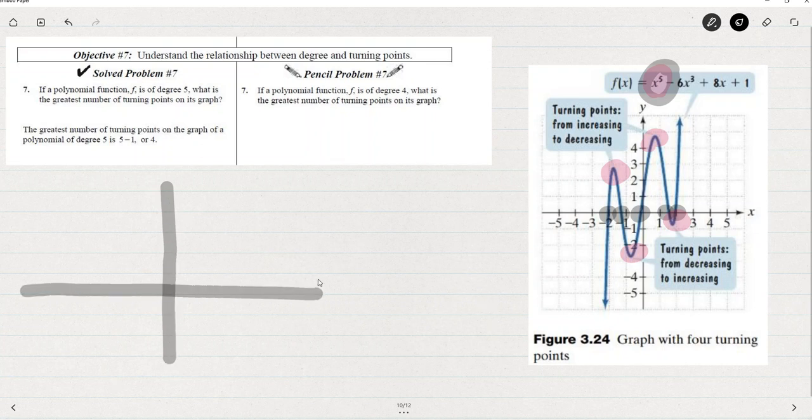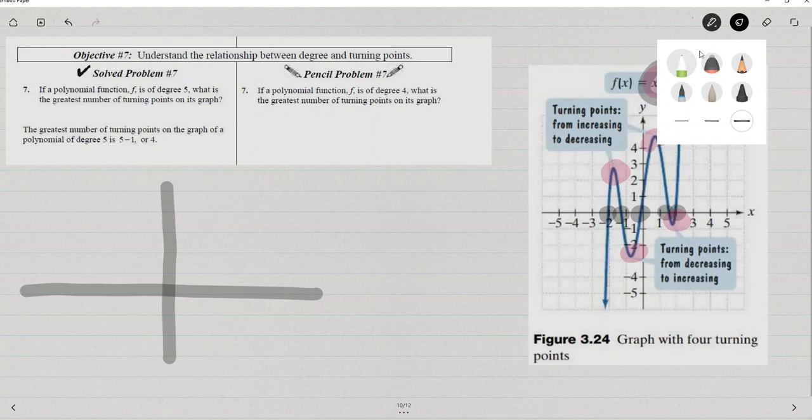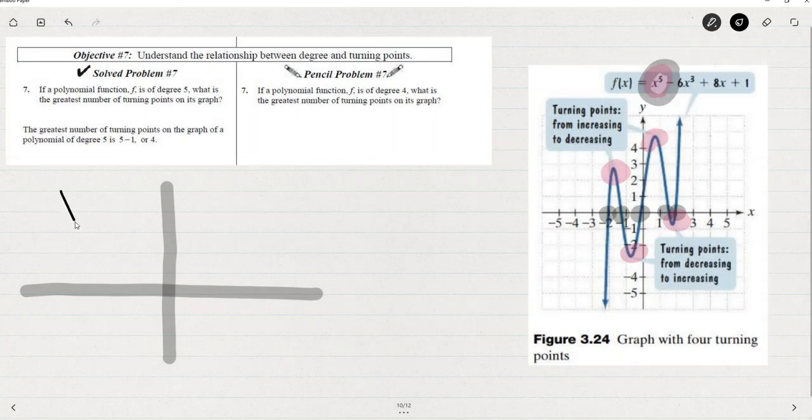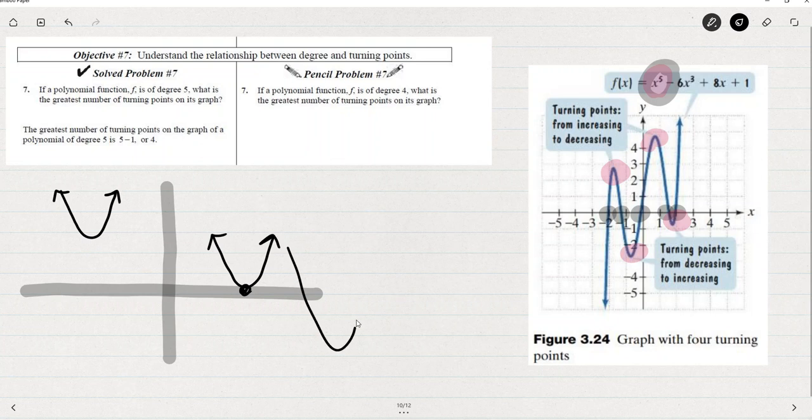a quadratic, degree two, I'm going to say there's at most two zeros. But do you see that this parabola has no zeros? This parabola has one zero. This parabola has two zeros.